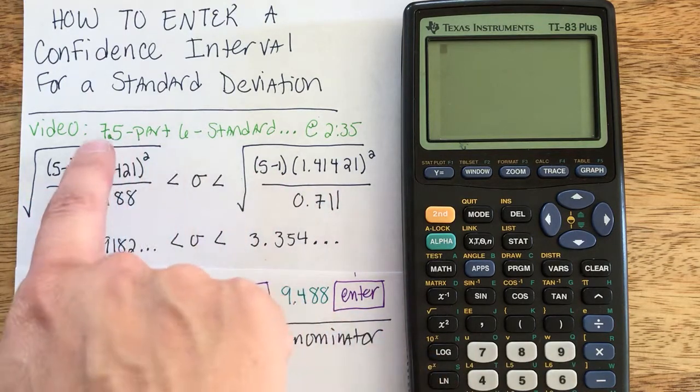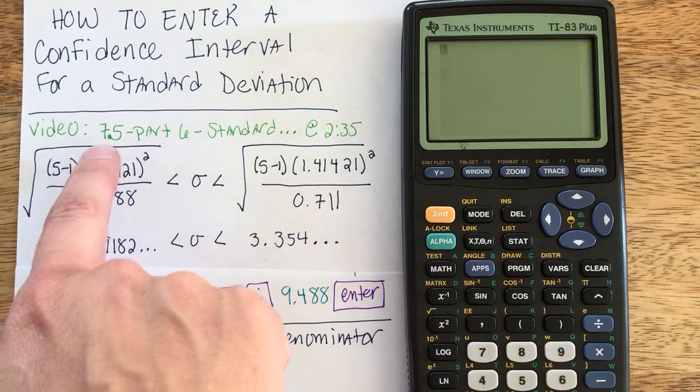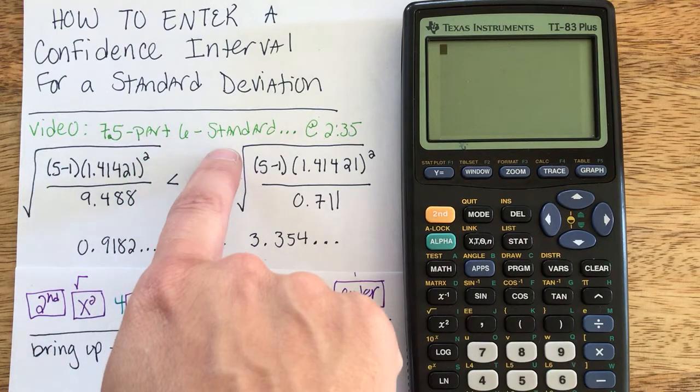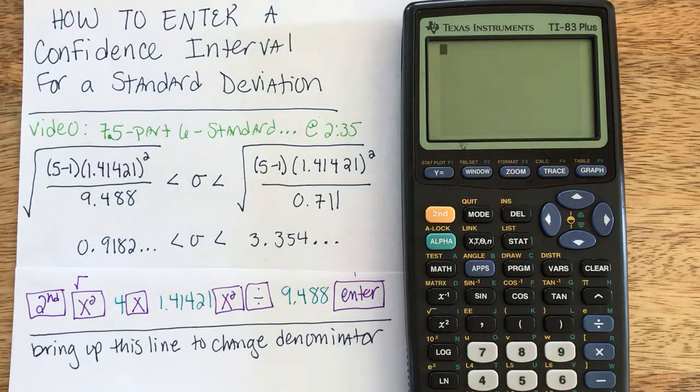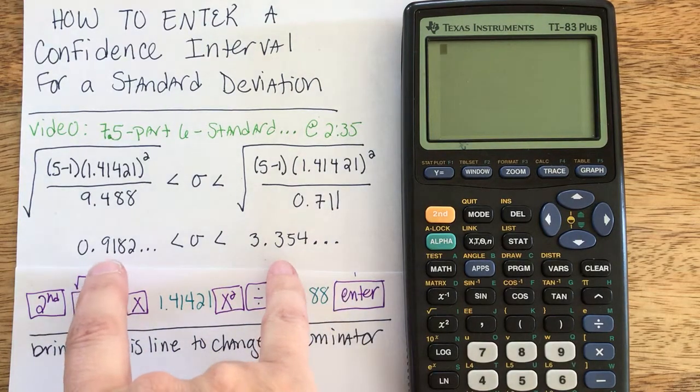I'm using the problem from my video titled 7.5 Part 6 Standard Deviation Etc. at time stamp 2 minutes and 35 seconds. I solved this problem getting the results indicated below.